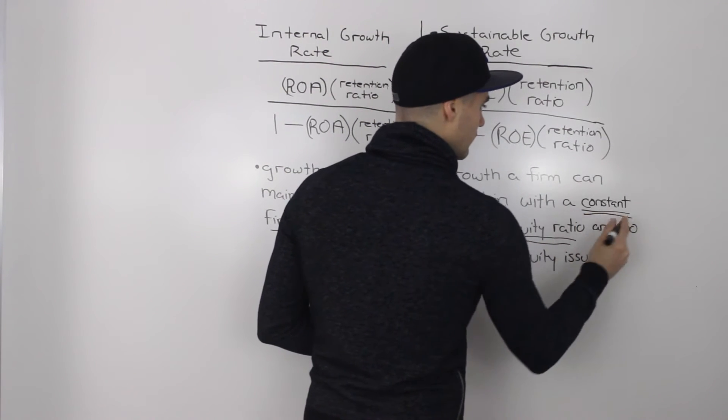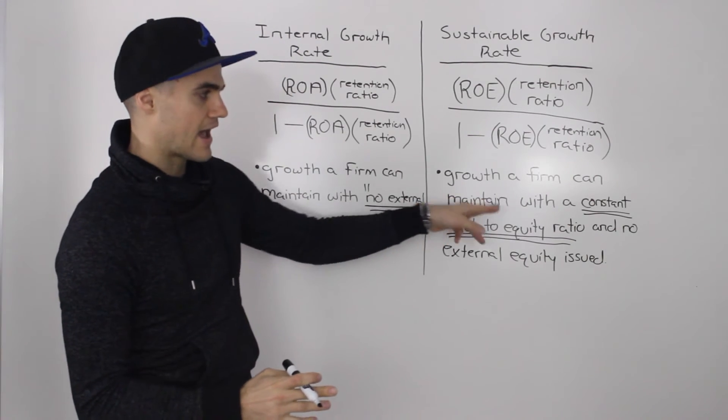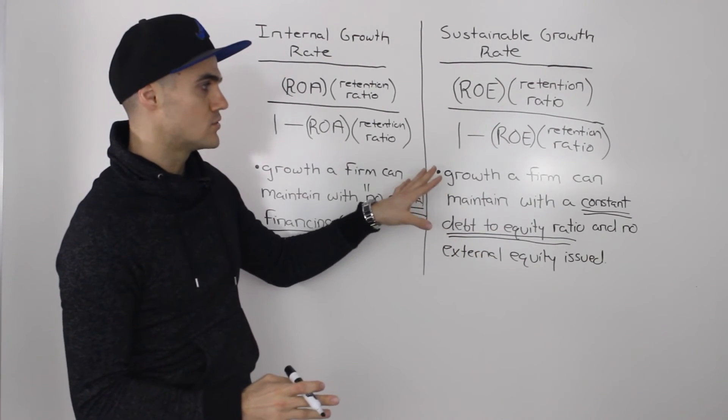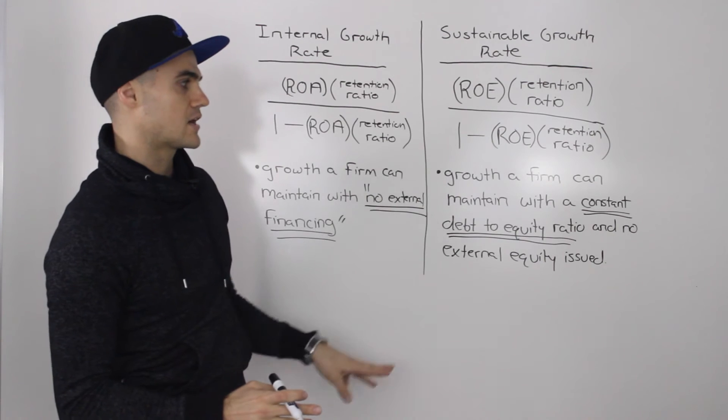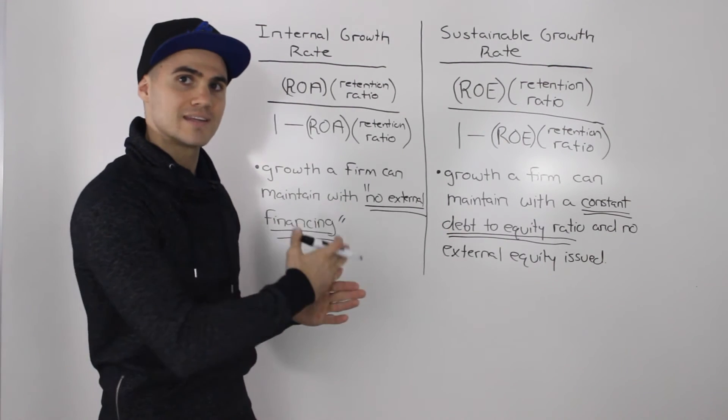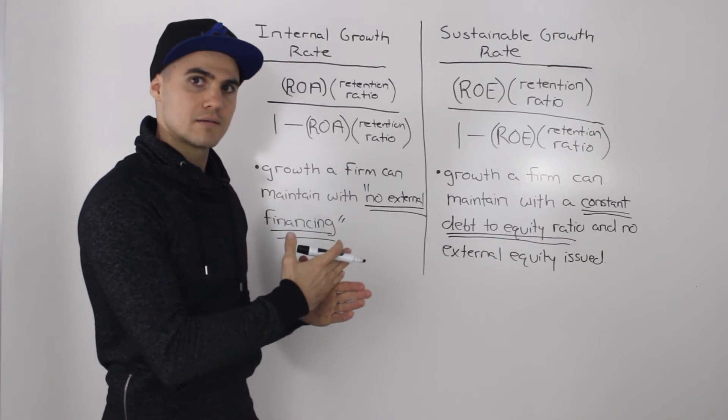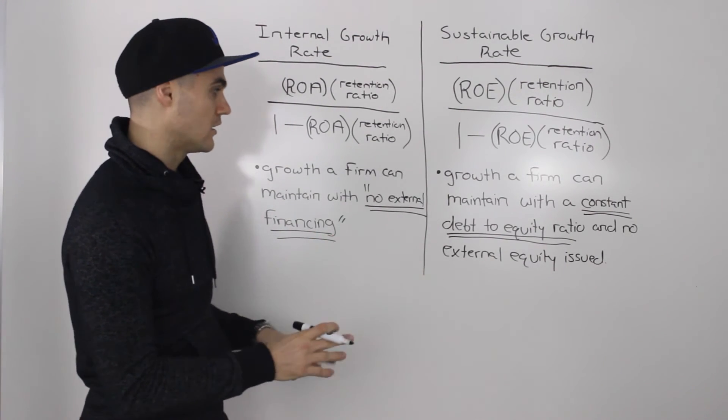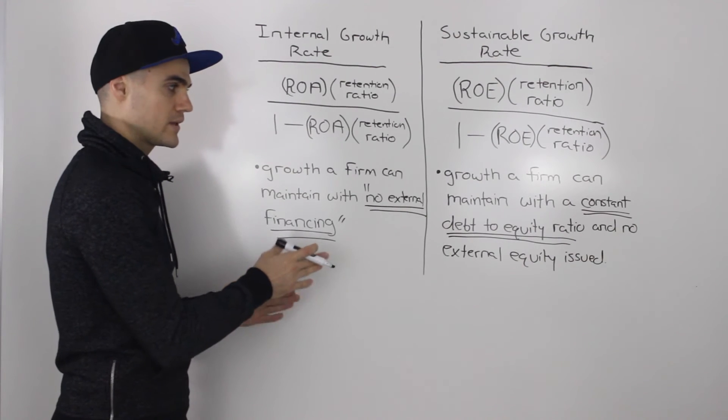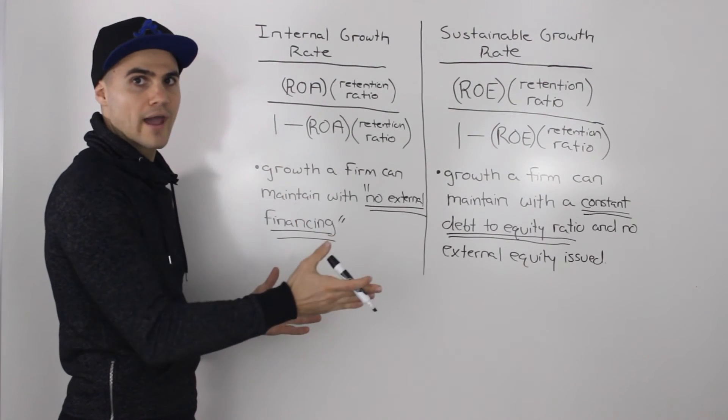So whenever you see that in a question, constant debt to equity ratio, then you know you're dealing with the sustainable growth rate because that means that we can take on more debt as long as it doesn't pass a certain capacity relative to equity versus with the internal growth rate. We can't take on any external debt or equity. The any increase in financing has to come from equity and the increase has to be in retained earnings.